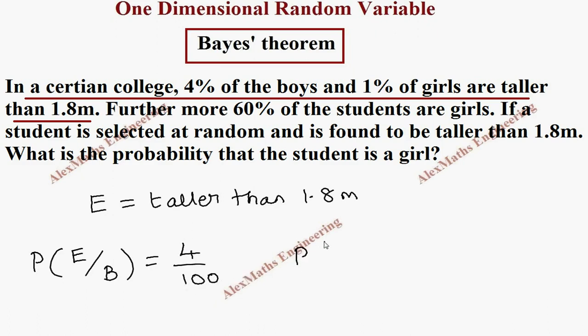In the same way, the girl, so by G, and its probability is given. That is E, taller than 1.8. This is 1 by 100.